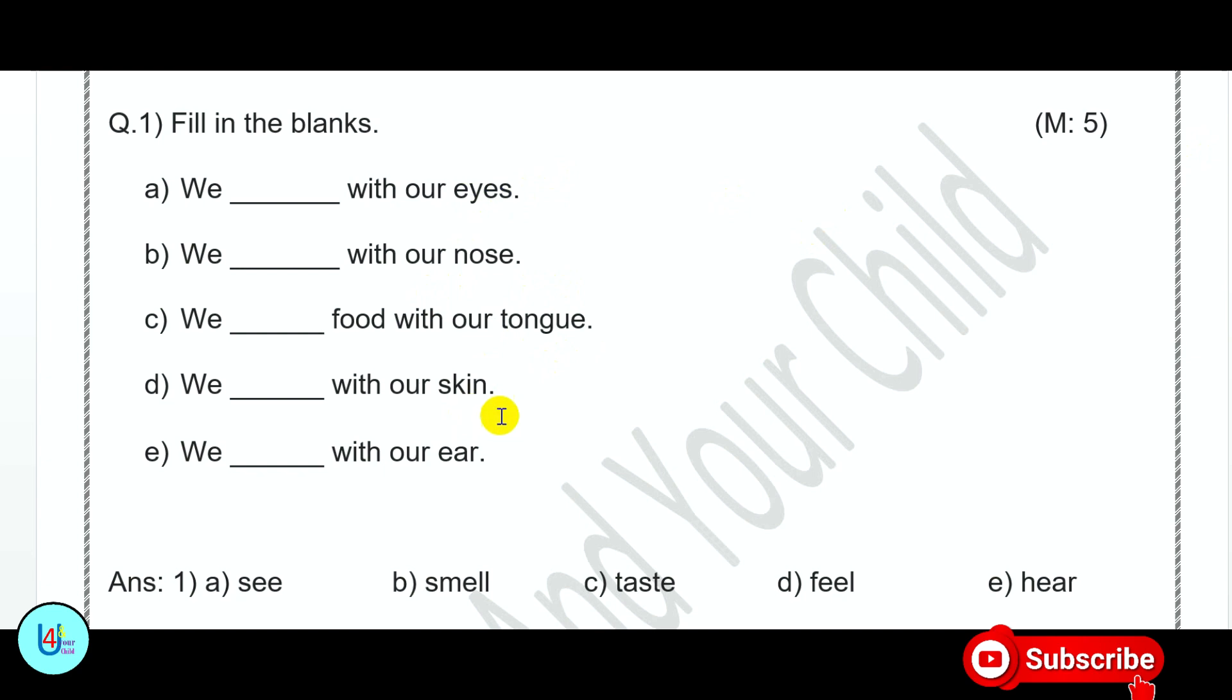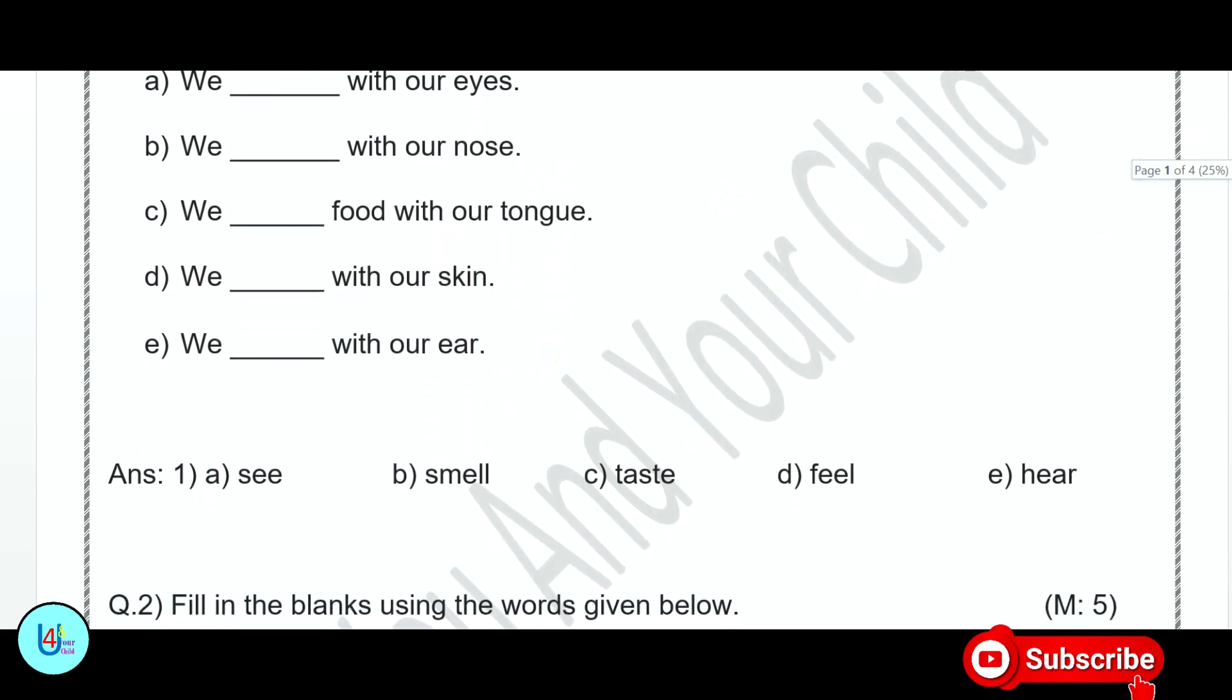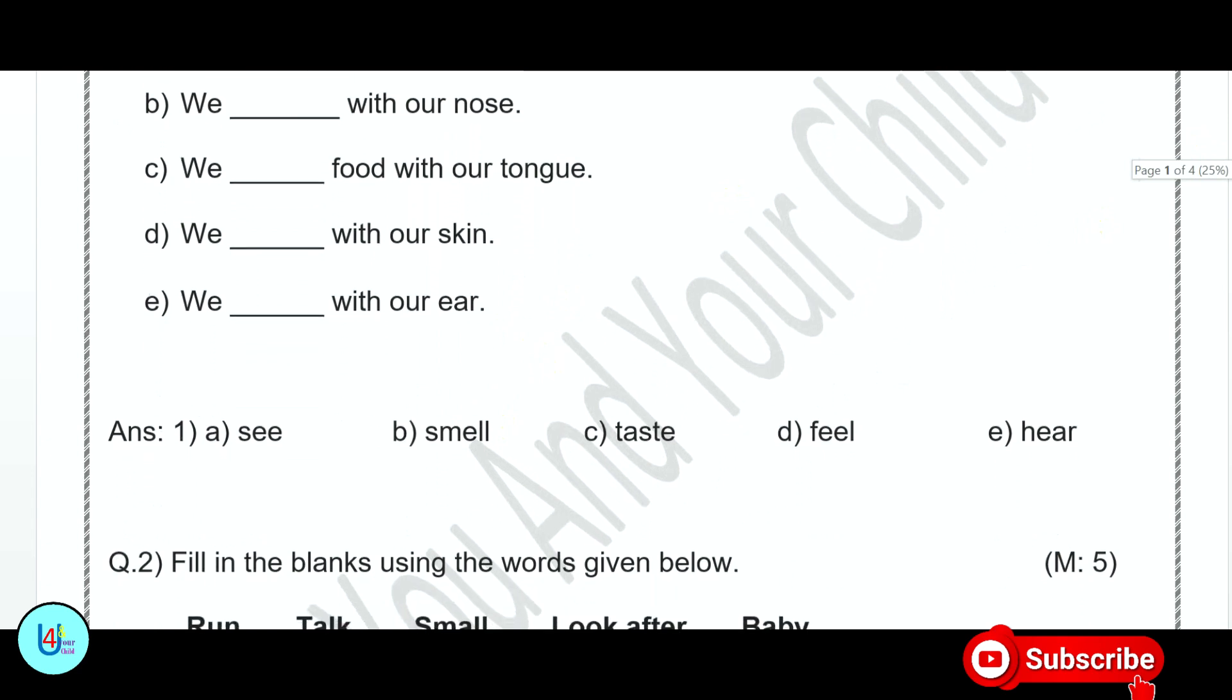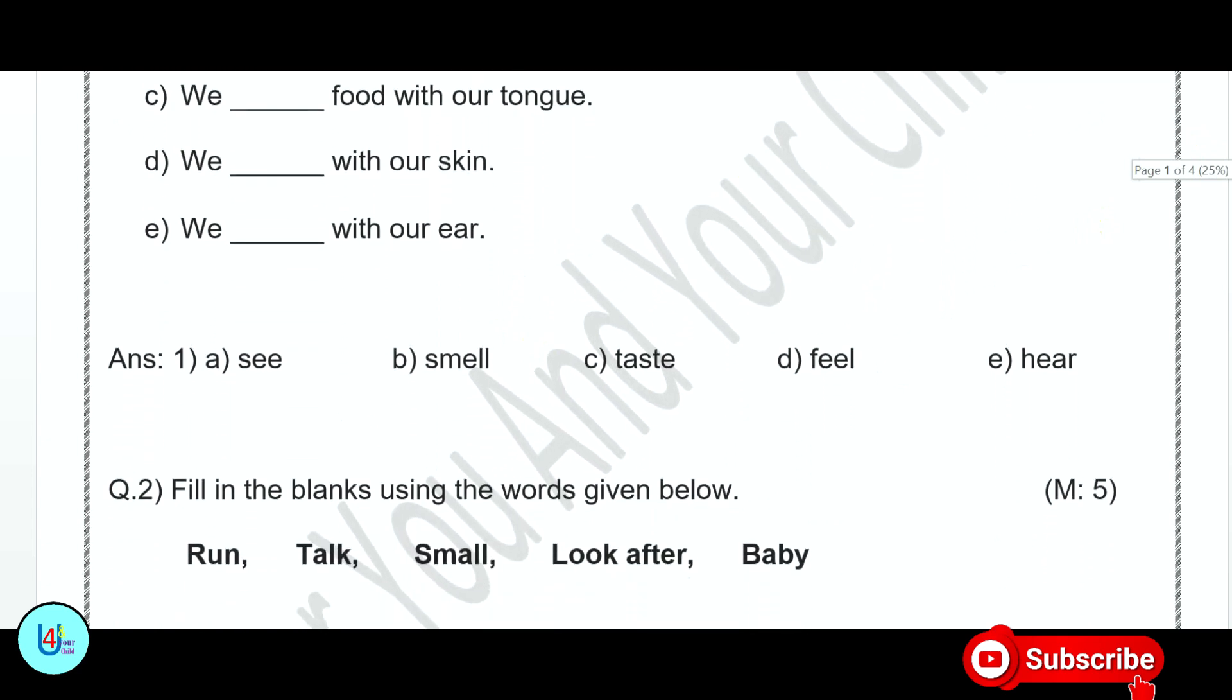Eyes, nose, tongue, skin, ear. This question is based on the five sense organs. Question number 2: Fill in the blanks using the words given below. Some words are given below. In the blank space, choose the correct words.